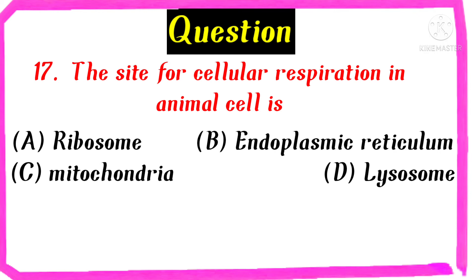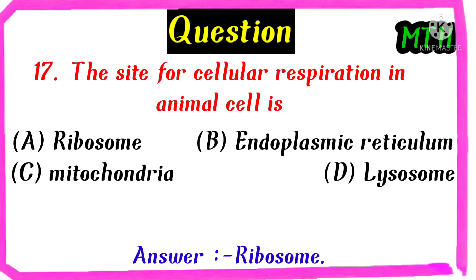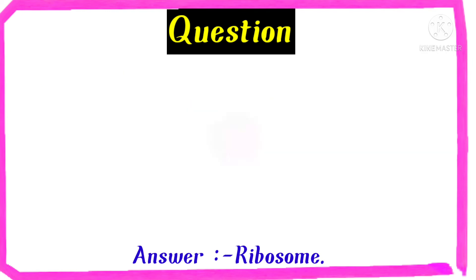The site for cellular respiration in animal cells is — ribosome, endoplasmic reticulum, mitochondria, lysosome. The right answer is ribosome.